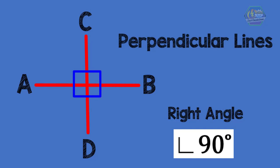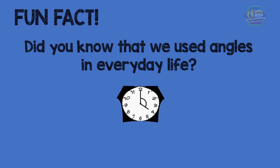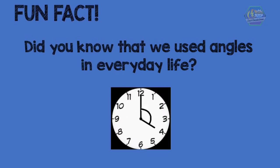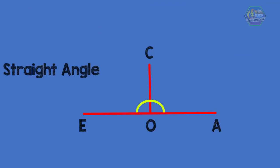Did you know that we use angles in everyday life? Try to look at an analog clock. Angle is formed between the minute hand and the hour hand. Now the next important angle that we need to know is the straight angle. Straight angle is measured exactly 180 degrees. Straight angles are actually just a straight line.